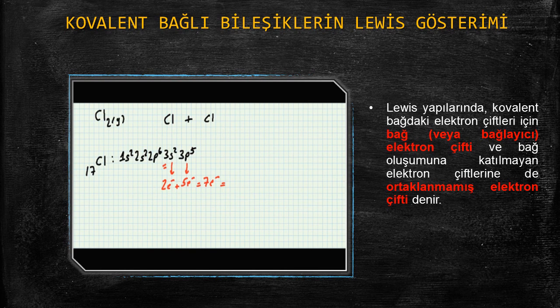3. tabaka en dış tabaka olduğu için bu tabakada yer alan elektronlar değerli elektron sayısı olarak adlandırılır. Yani klor atomunun değerli elektron sayısı 7'dir. Şimdi Lewis simgelerini yazarsak klor atomları için, değerli elektron sayısı 7 olduğu için 7 tane nokta koyacağım. 7 tane noktayı yerleştirdim.